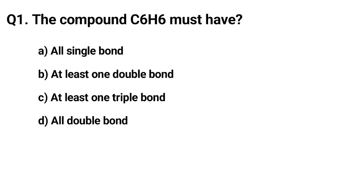Question number 1. The compound C6H6 must have. The correct answer of that question is option B: at least one double bond.